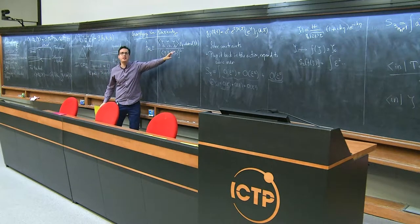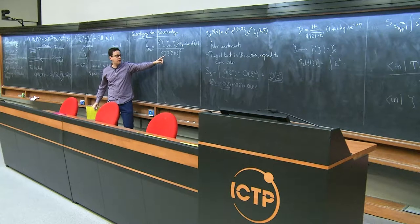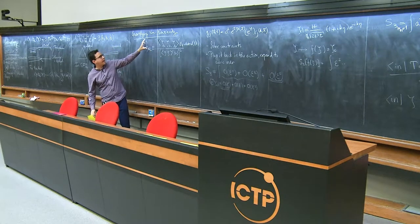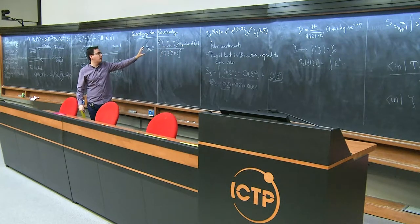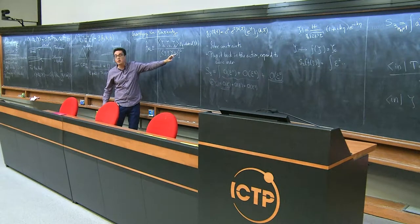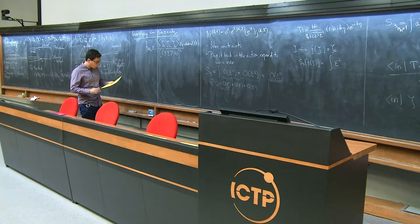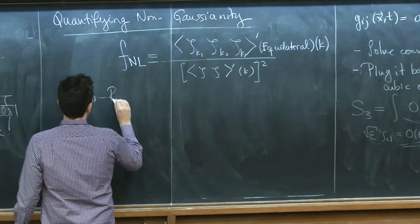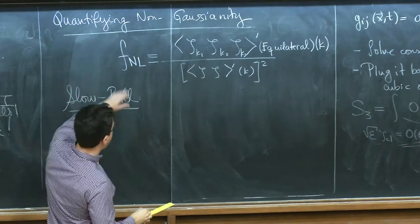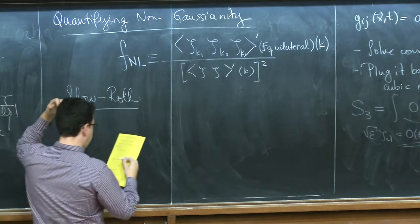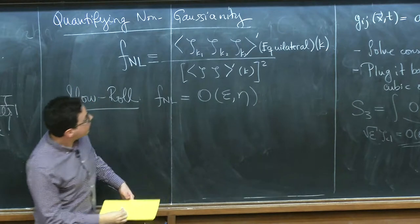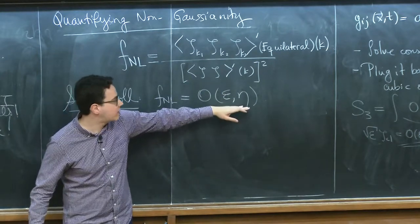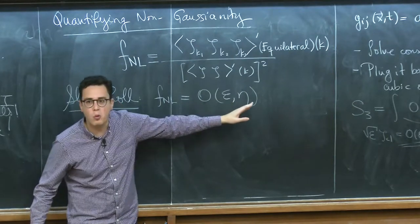For slow-roll inflation — Maldacena's calculation — f_NL peaks around the equilateral configuration but f_NL is of order slow-roll factors ε, η. So even accounting for the extra factor of 10⁵, the size of the non-Gaussianity is probably of order 0.01. There is a dream that one could measure this using 21-centimeter radiation from the dark ages — there was some claimed detection of the monopole of this radiation on the news recently. But for single-field inflation, this is essentially hopeless.